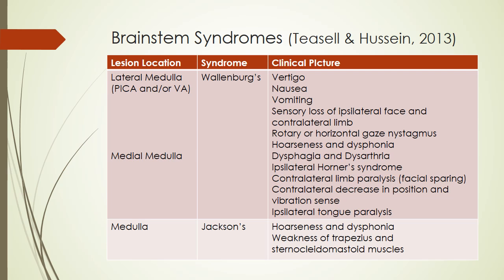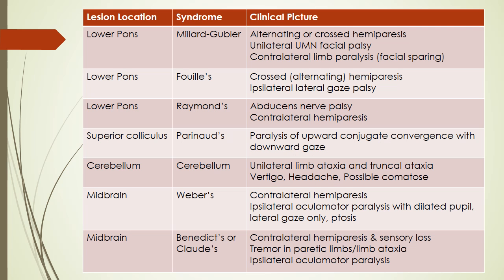Based on lesion location, there are a number of classic brainstem syndromes identifiable by their symptoms. Wallenberg syndrome tends to be more well known and results from a lesion in the lateral or medial medulla; a patient with Wallenberg syndrome will most definitely be on an SLP caseload due to the presence of dysphagia and dysarthria. While each syndrome has unique characteristics, there is a general pattern of ipsilateral cranial nerve concerns and contralateral hemiparesis or sensory deficits.